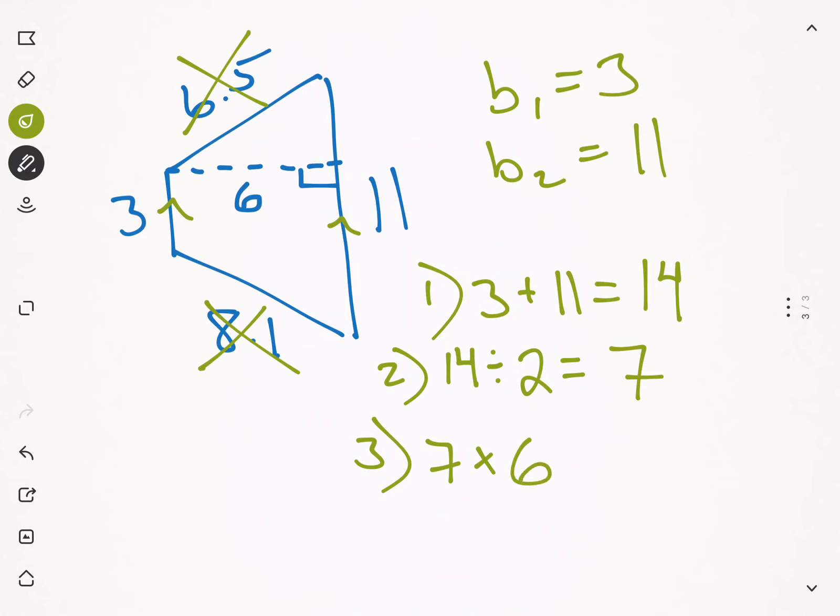And I didn't talk about it yet, but just like with triangles and parallelograms, to find the height, we find that right angle. That gives us that dotted line, that's the height. And that connects your bases. So seven times six is forty-two. So our area is equal to forty-two units squared.